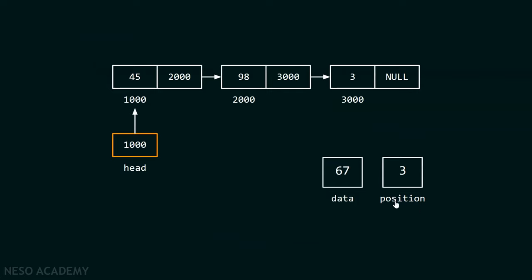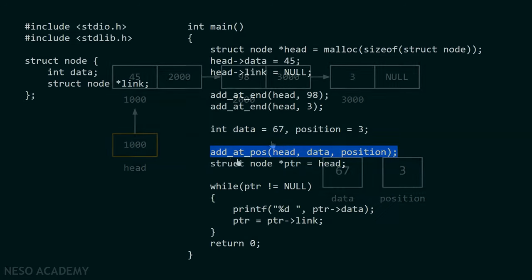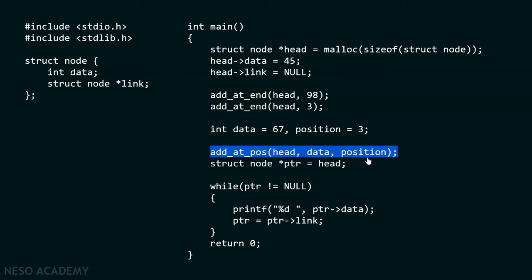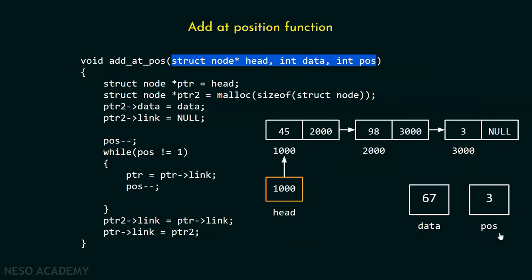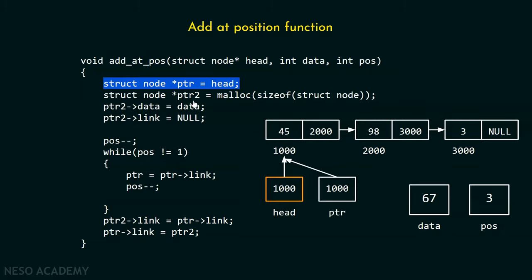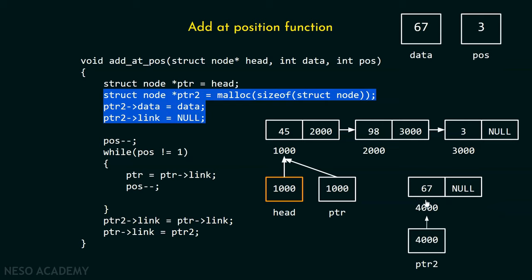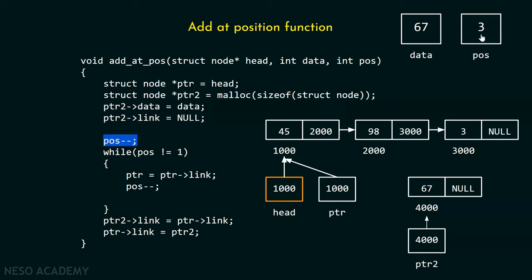Data contains value 67 and position contains value 3. We then call addAtPose function passing head, data, and position. Inside addAtPose, we have pointer ptr pointing to the first node, and ptr2 created by allocating memory for a new node at address 4000. ptr2->data is set to 67, and ptr2->link is currently null. This piece of code then handles traversing the list using a POSE variable inside a while loop, decrementing POSE first.